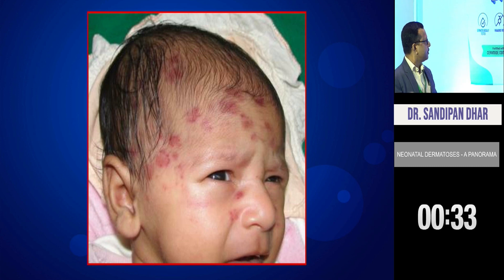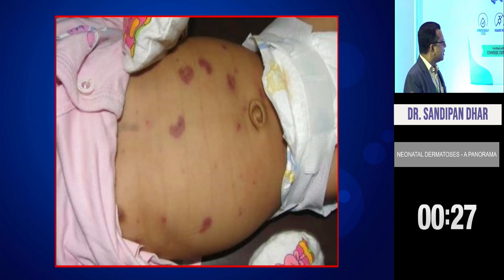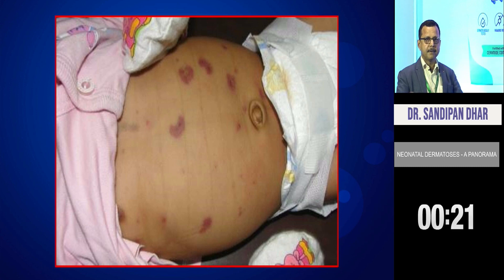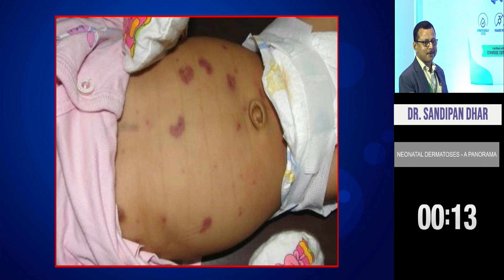This baby presenting with this type of lesions over the scalp, around the eyes — slightly scaling lesions over the trunk — very characteristic. You have to ask for two important tests in the mother as well as the baby: anti-Ro and anti-La antibody. This is neonatal lupus.